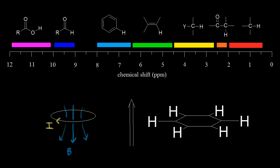We didn't do this in the earlier video. As you get closer to the edge of this loop, inside of the loop the magnetic field will be pointing down, but outside of the loop of wire the magnetic field will be pointing up. Same thing on this side — pointing down inside, and the magnetic field points up on the outside of the loop.